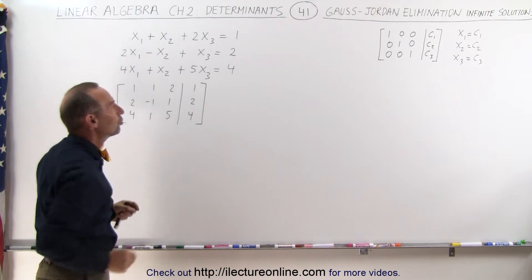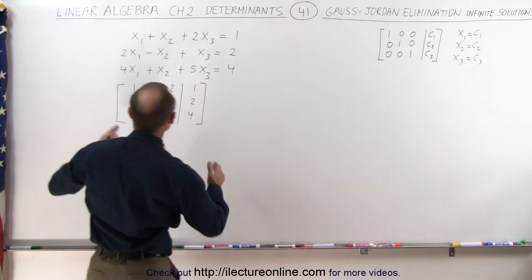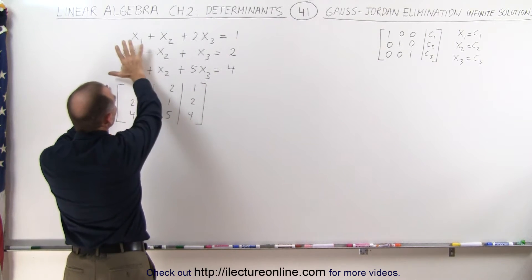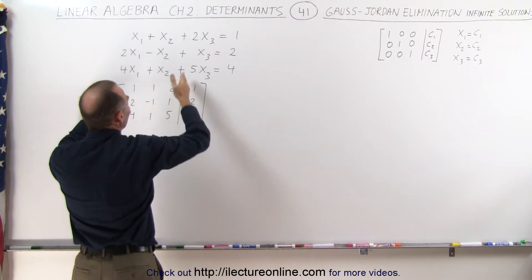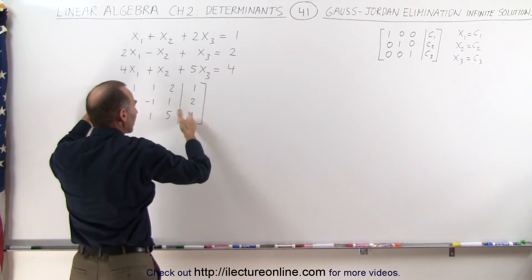If there's a unique solution, eventually we'll be able to take the augmented matrix, which is created by taking the coefficients of the three variables, and then having the constants on the other side, the equals sign over here, as the augmented part of the matrix.